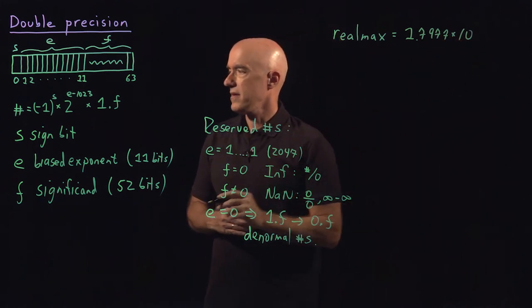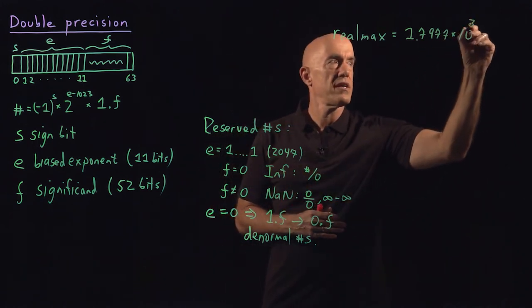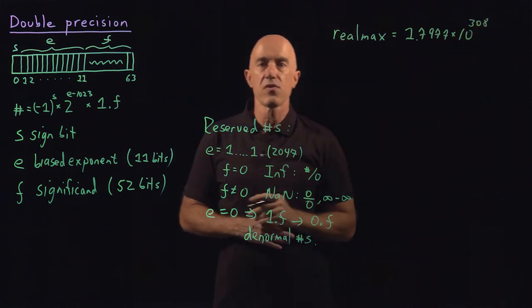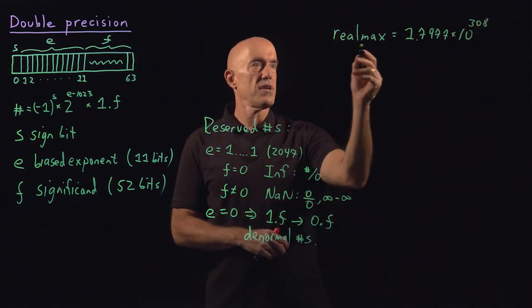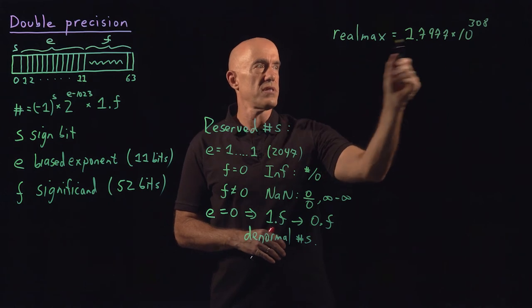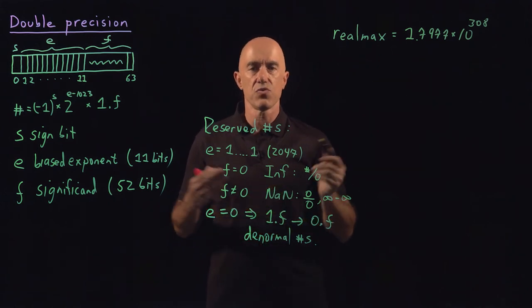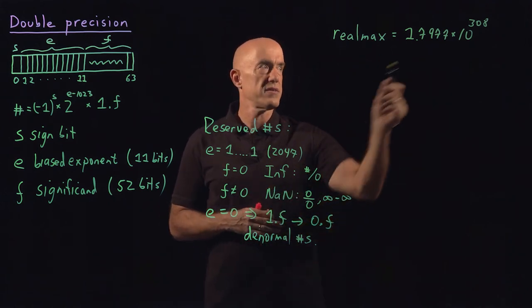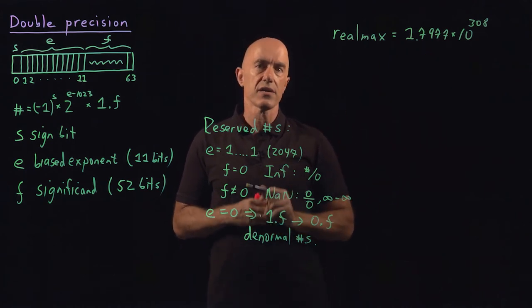So if you calculate what that is, you get 1.7977 and base 10 would be 10 to the 308, a very large number. So the idea being that if you try to compute a number larger than this, you would get infinity. This is the largest number you can calculate with.